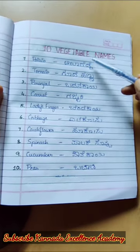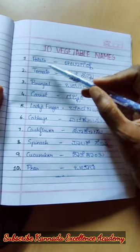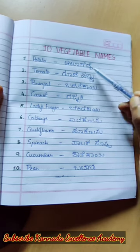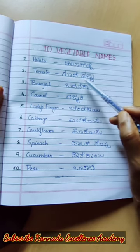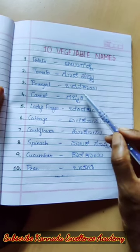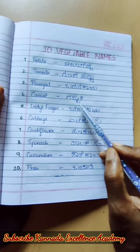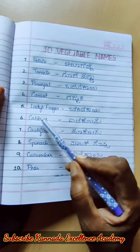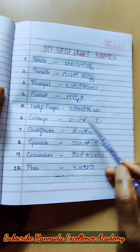Ten vegetable names in English and Kannada. Potato — Alugedde. Tomato — Gudehannu. Brinjal — Badanekai. Carrot — Gajari. Ladyfinger — Bendekai.